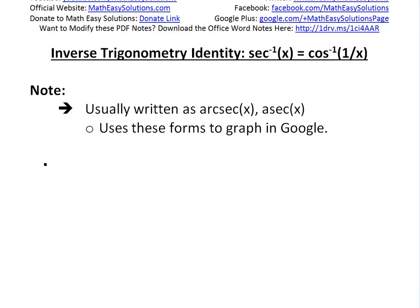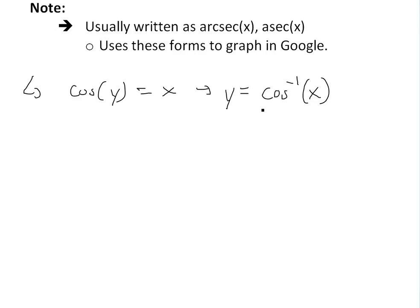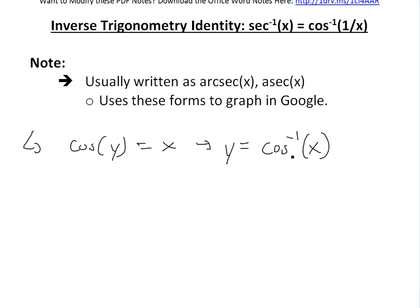So first let's write out cosine of y is equal to x. Writing it like this because the definition of inverse is solving for the y function in terms of x. So basically it's kind of like solving for the x, but now we just reverse it. So basically y would be written as the inverse of cosine of x right here. So that is y and it's written as an inverse cosine of x.